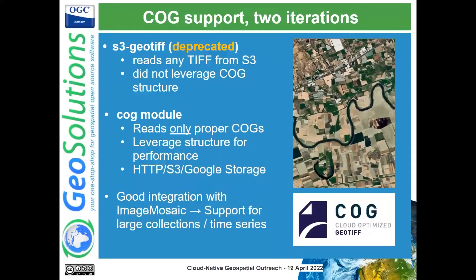Then we got COG support. We had two iterations: the first module was called S3 GeoTiff. It was specific for S3, it didn't work with any other blob storage, and it did not leverage the COG structure, which allows for efficient data transfer out of blob storage.